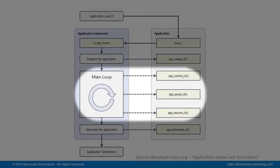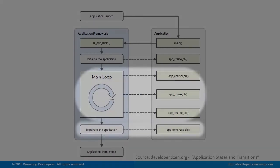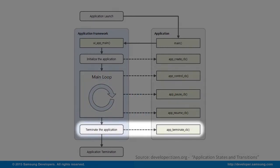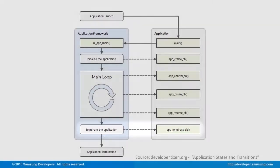Next is the main loop. This involves three callbacks, enabling it to switch between three states. And lastly, app termination that was brought by the app terminate callback to the last state.